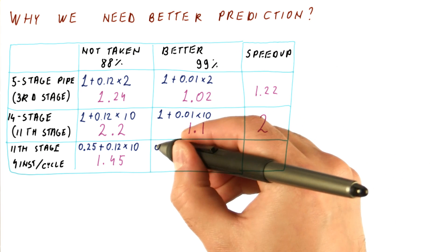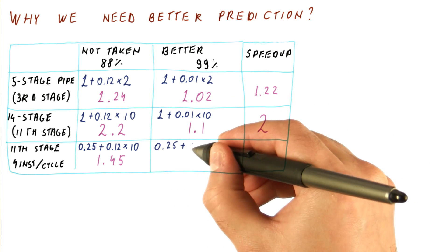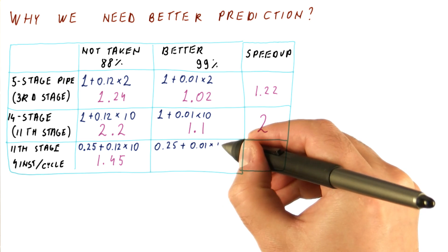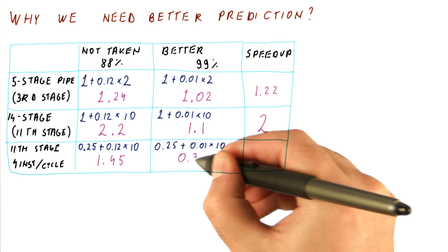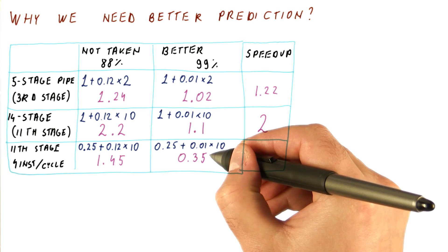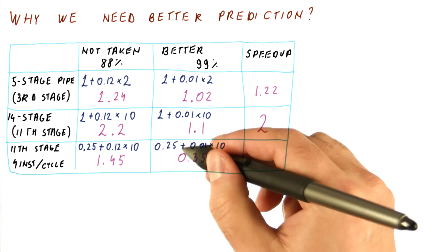Now let's look at the better predictor, which should give us the ideal CPI plus 1% of the time 10 cycle penalty, and that results in a CPI of 0.35, or about three instructions per cycle even with the branches.